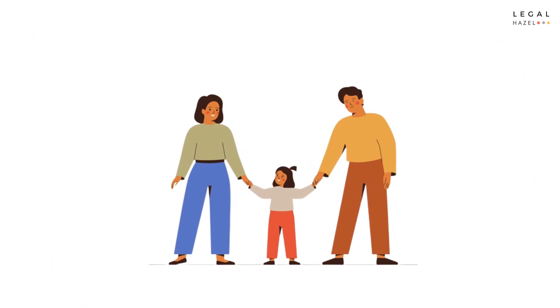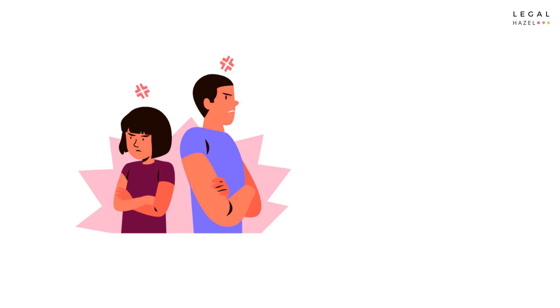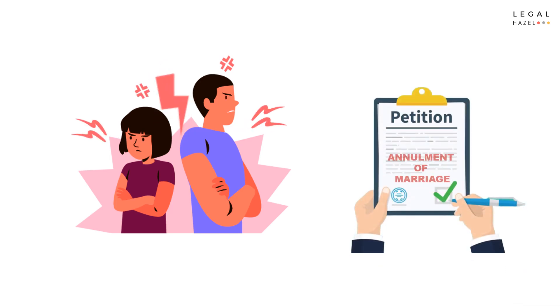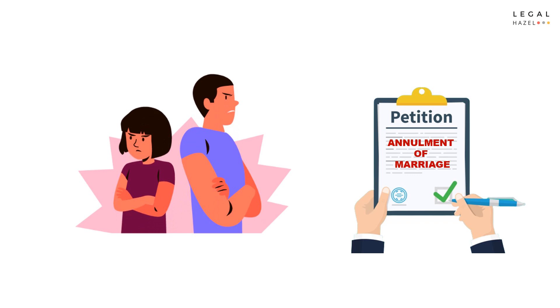Let's assume the husband as Anil and his wife as Tina, and the alleged paramour of Tina as Raj. Since the relationship between Anil and Tina was turning sour, Tina filed a petition for annulment of their marriage before the family court on the ground of cruelty.